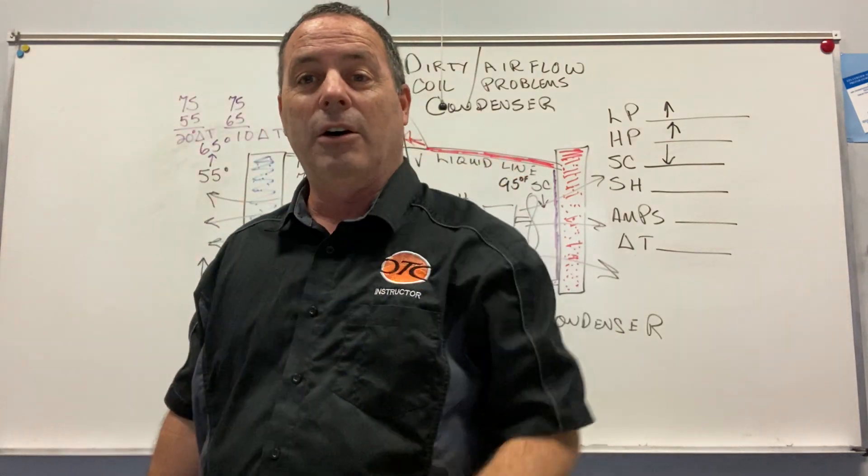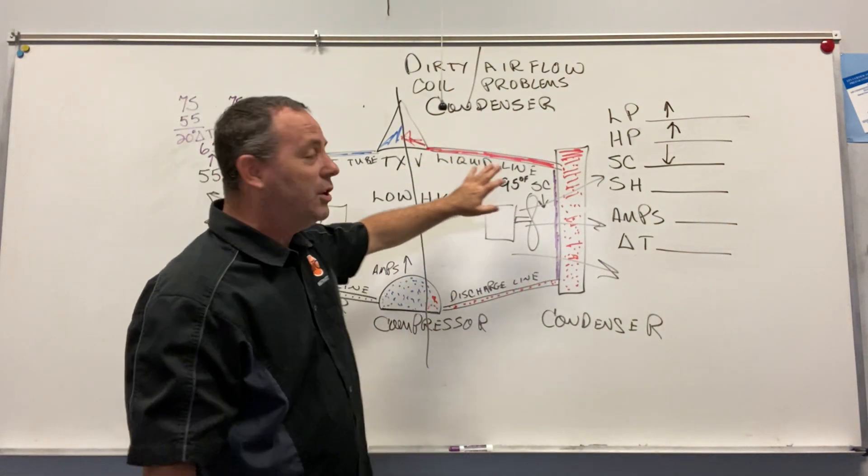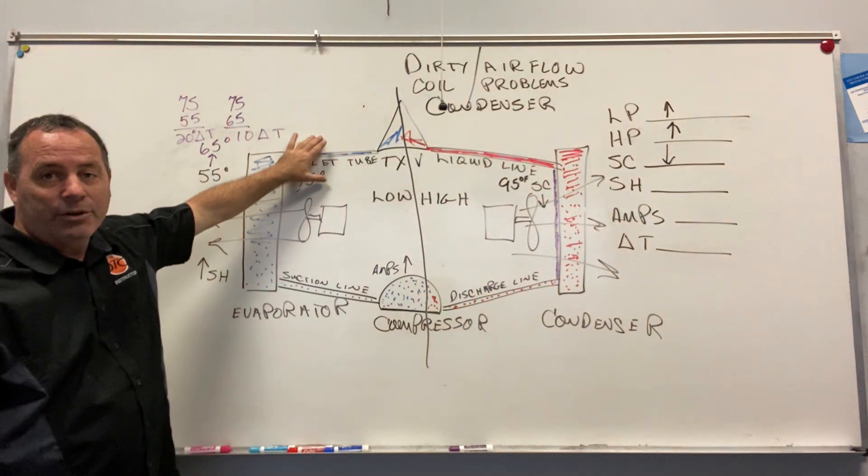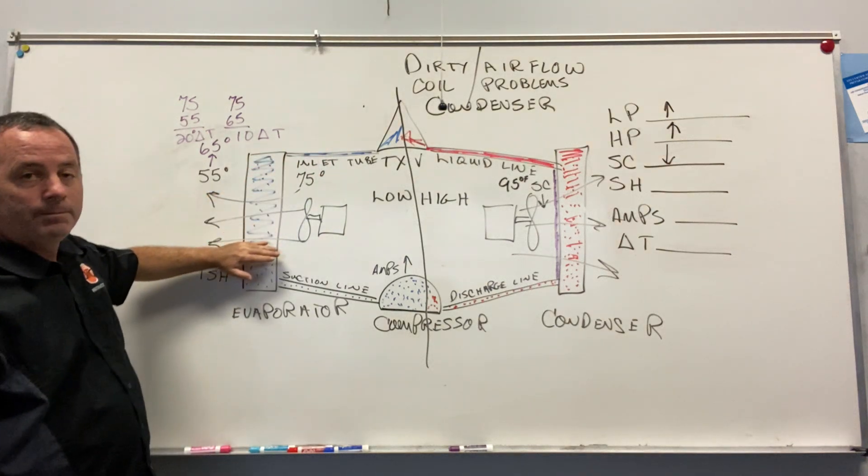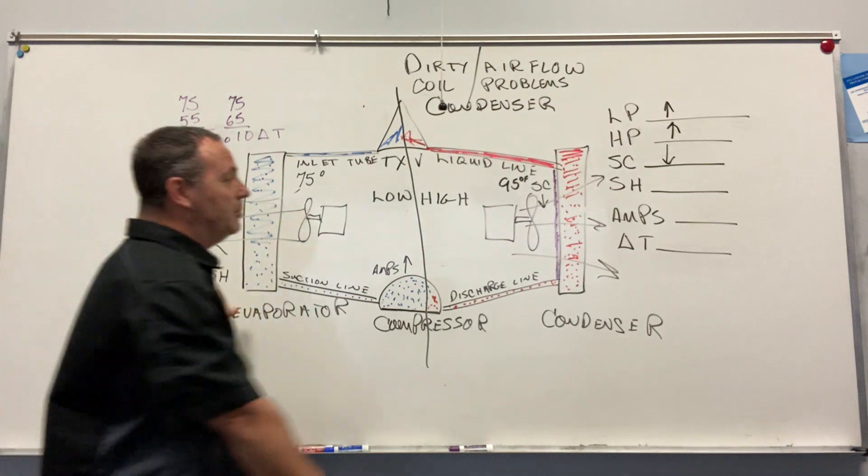Your liquid line will be hotter. When they get a real dirty coil, it might be hot to the touch. So that might be hot. Now, of course, you're going to have more heat entering your evaporator coil. So your coil is going to boil off faster and have increased superheat.